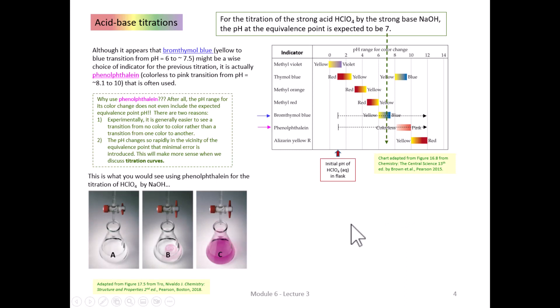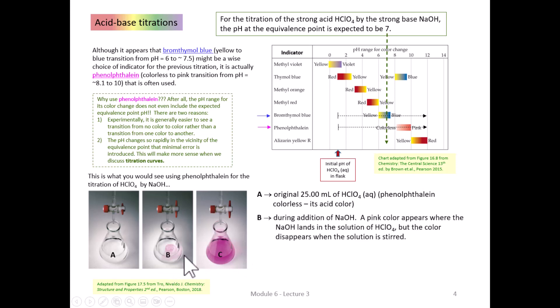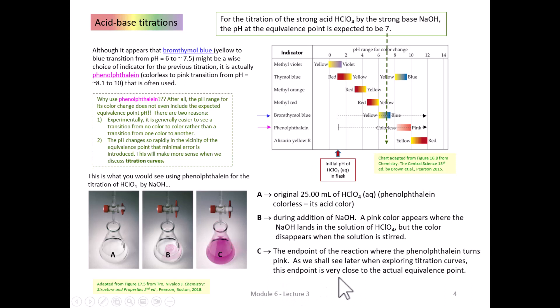In the lab — and many of you have done this titration in general chemistry or high school — when you start out, the flask has no color if you're using phenolphthalein because the perchloric acid is below pH 8. When you begin adding sodium hydroxide, you might see a little burst of pink from a locally high concentration of base, but stirring makes the color disappear. At the endpoint, which should be very close to the equivalence point, the phenolphthalein turns pink and stays that way.